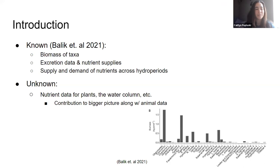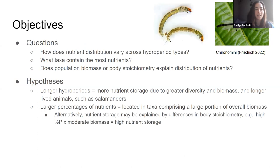From Dr. Bailey's paper, we currently have data on biomass, excretion and nutrient supply by animals, as well as supply and demand for nitrogen and phosphorus. From the biomass data, we know the permanent ponds have the highest diversity. For this project, I specifically looked at the content of nitrogen and phosphorus in the body of various taxa across all three hydroperiods, and combining that with biomass data contributes to knowledge about where and how much nutrients are stored. What's still unknown is how much of each nutrient is stored in non-animal materials. The questions asked in this project were how nutrient distributions varied across hydroperiods, which taxa contributes the most nutrients, and whether biomass or the body's stoichiometry — the percent nutrient in the body — better explains the distribution of these nutrients.